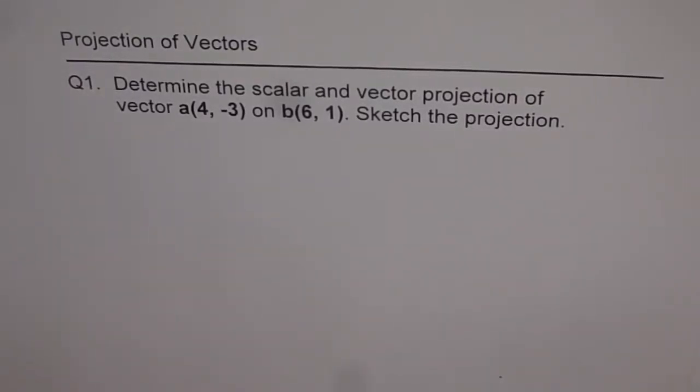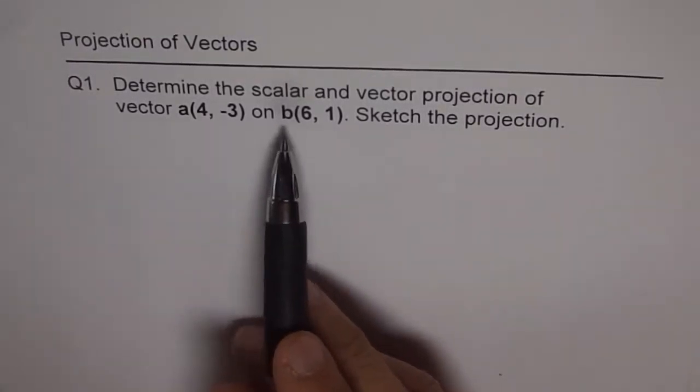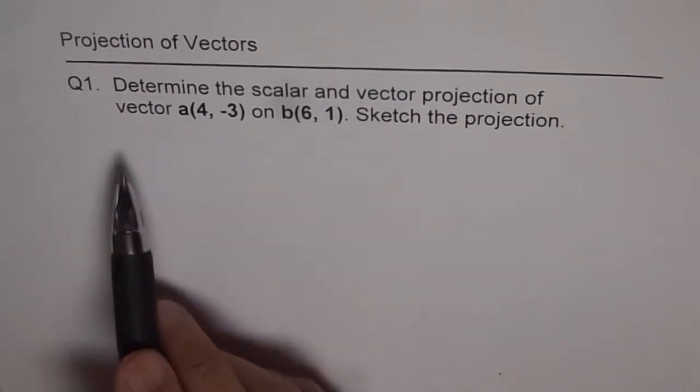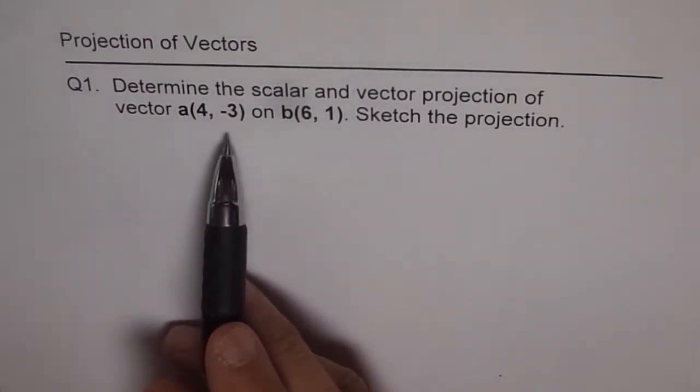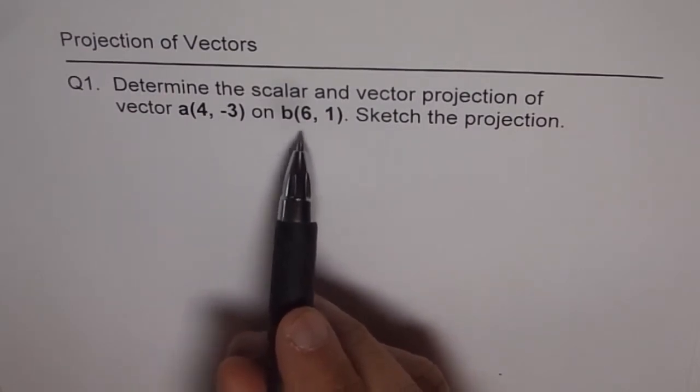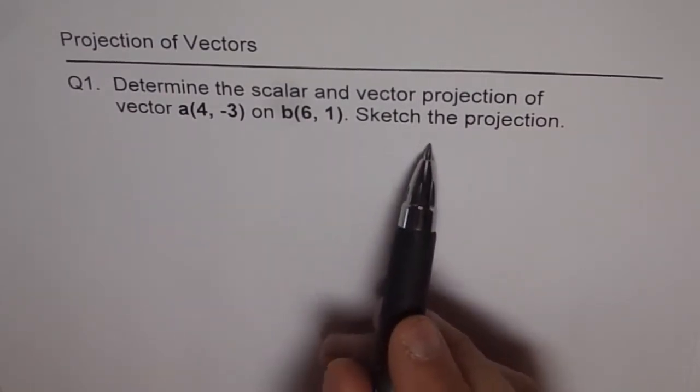Projection of vectors. Question 1. Determine the scalar and vector projection of vector A(4,-3) on B(6,1). Sketch the projection.